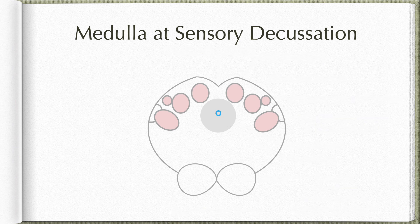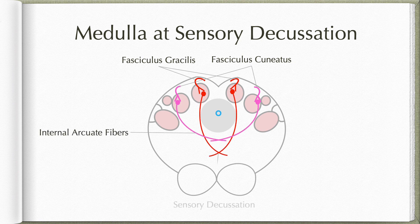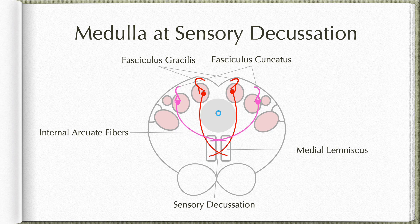Let us first discuss the sensory decussation. The fasciculus gracilis carries fibers from the sacral, lumbar, and lower thoracic segments, and these fibers relay in the nucleus gracilis. The fasciculus cuneatus carries information from the upper thoracic and cervical segments and relays in the nucleus cuneatus. Axons of the neurons of these nuclei proceed around the central gray matter as internal arcuate fibers, cross in the midline at the sensory decussation, and collect on the opposite side to form a flattened bundle of fibers known as the medial lemniscus.